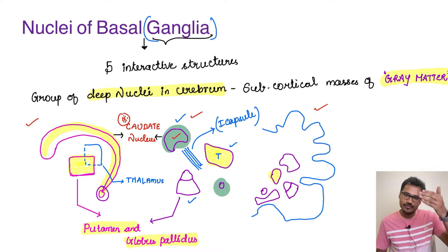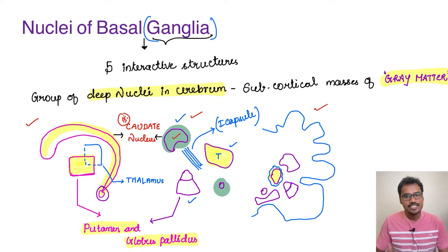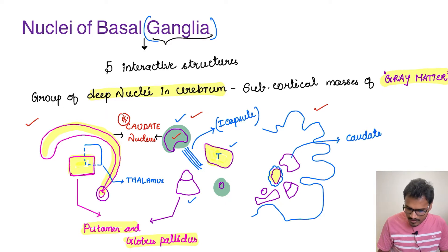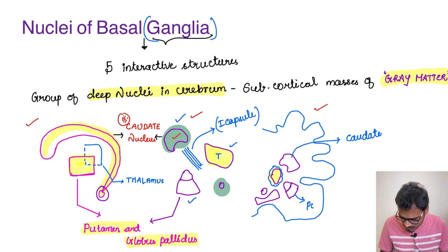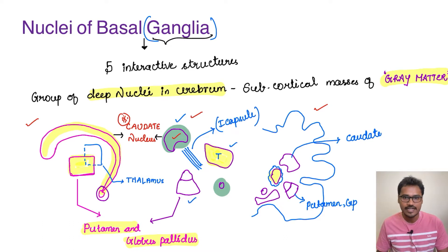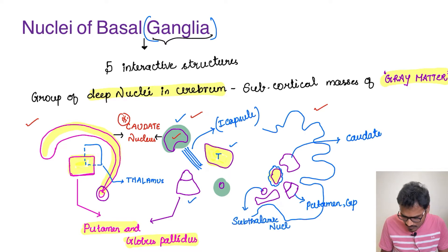In the frontal view, the yellow shaded structure is our thalamus. Just next to the thalamus is the caudate nucleus. The two nuclei that look like a cone or lens-like structure are the putamen and globus pallidus. These are three of the five important interactive structures. The remaining two are the subthalamic nucleus and substantia nigra. The subthalamic nucleus is visible here, and below it we have the substantia nigra.